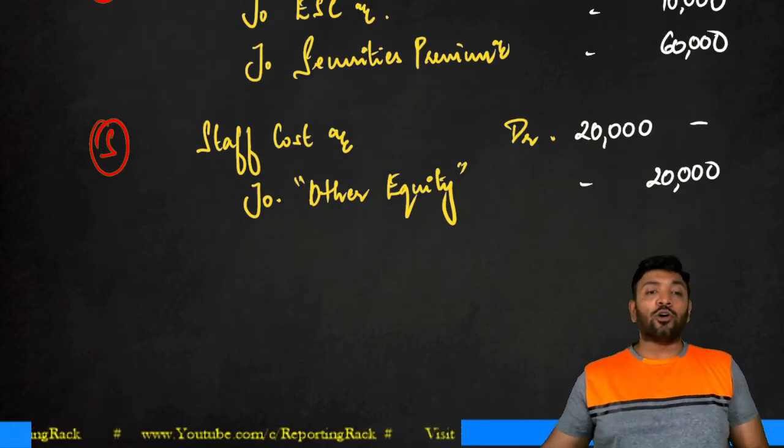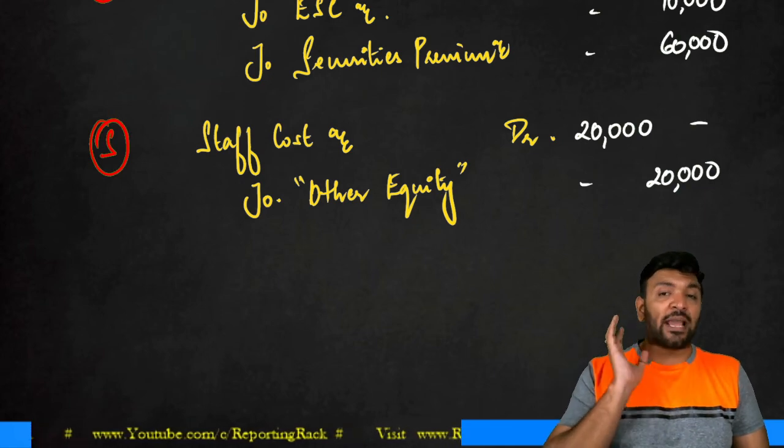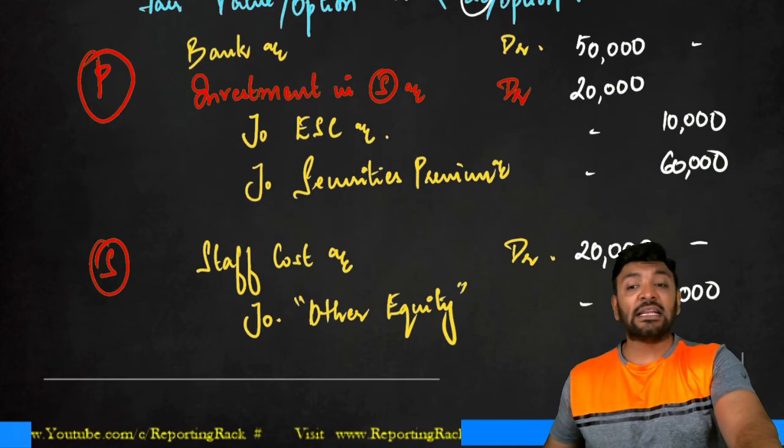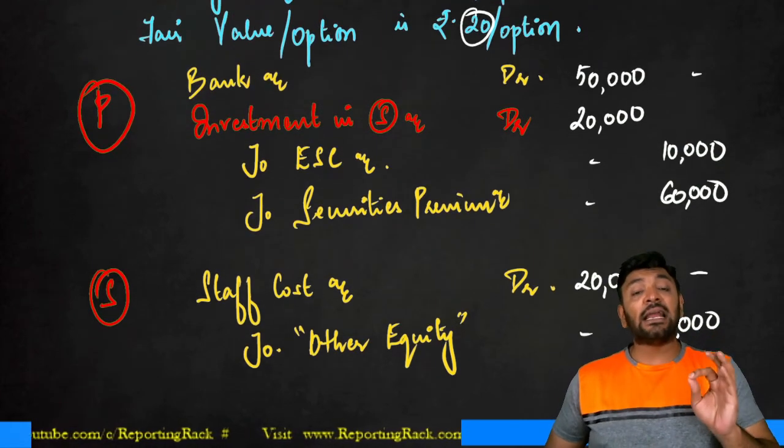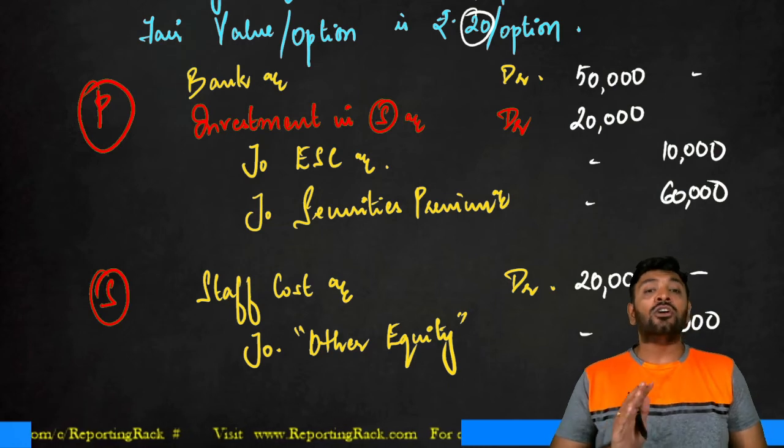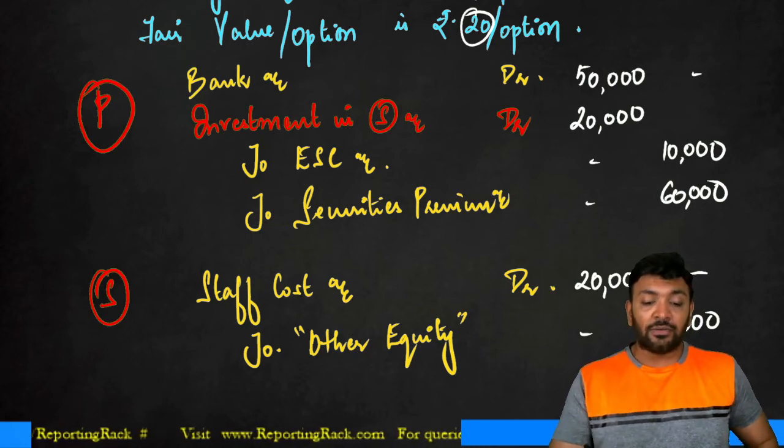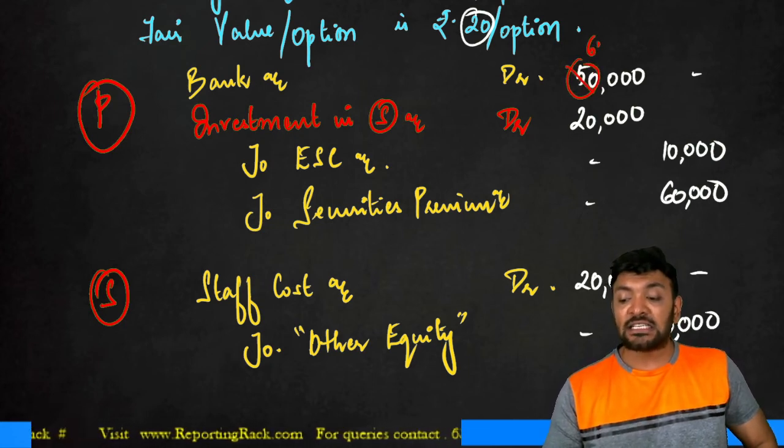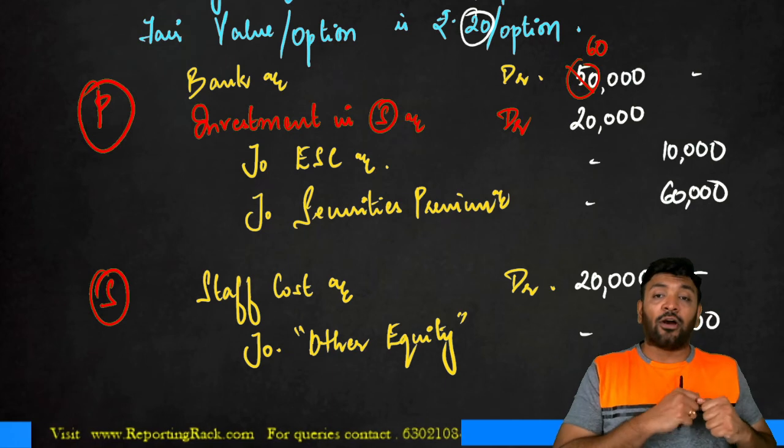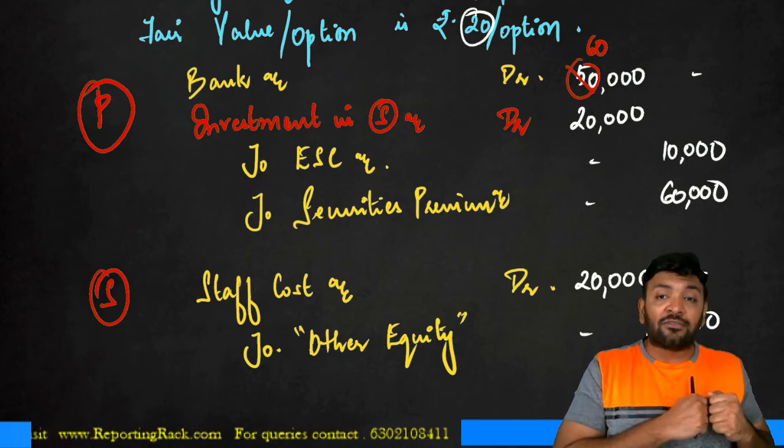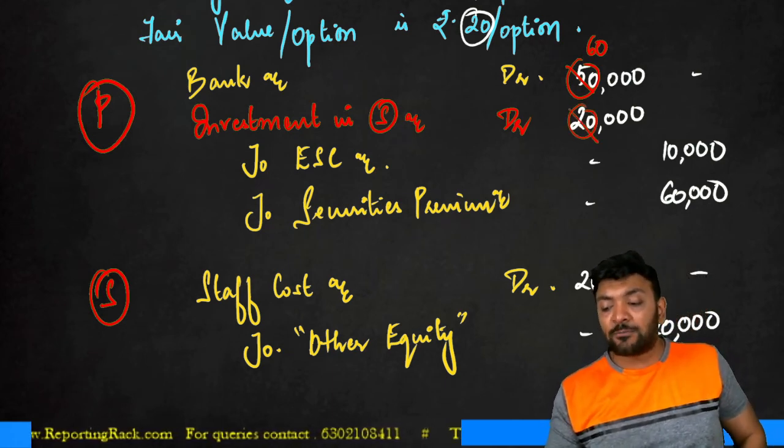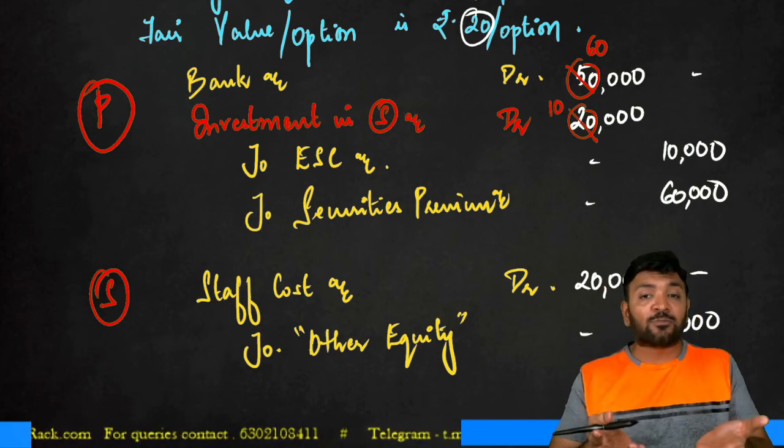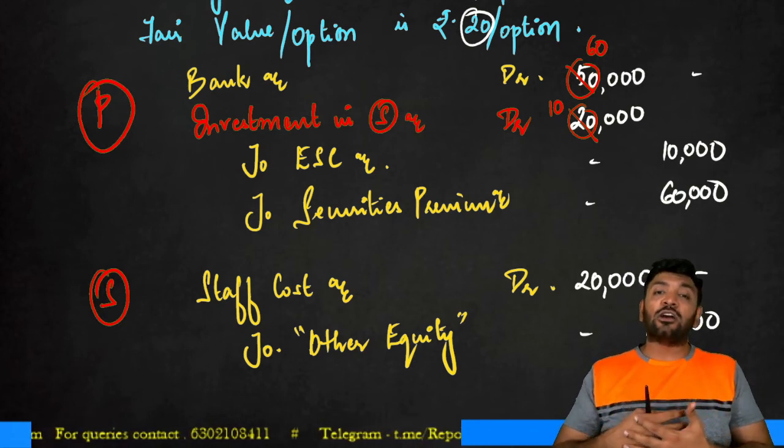Let us say, for suppose, subsidiary is reimbursing the parent enterprise to the extent of 50% of cost. How will your entry change if subsidiary is reimbursing the parent enterprise to the extent of 50% of cost? If that situation happens, instead of this 50,000, it will become 60,000. 50 which I received from the employee, 10 which I received from the subsidiary. My investment in subsidiary will now be only 10,000. Because out of the fair value, 50% is reimbursed by the subsidiary and only 10 rupees will be the cost.